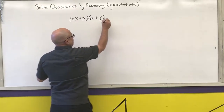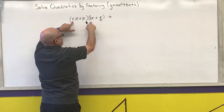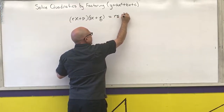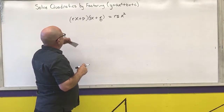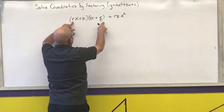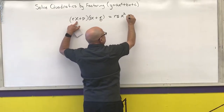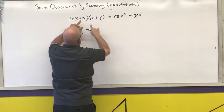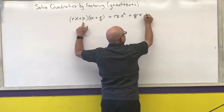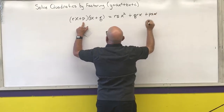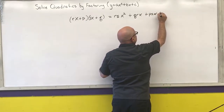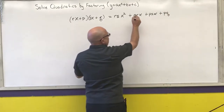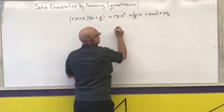If I multiply these out, first is rs times x times x, which is rsx squared. Then the outers give qrx, then psx, then pq. And I can factor out the x from that middle section.